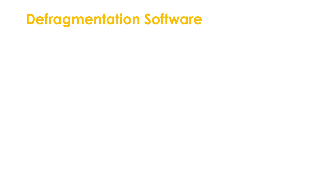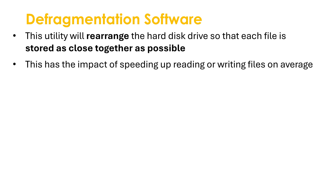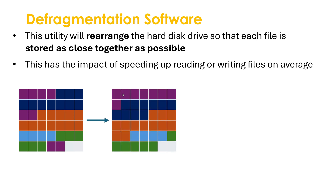We still need to know about defragmentation software, which tries to fix this issue and help maintain our computer to make it run more smoothly. This utility rearranges the hard drive so that each file is stored as close together as possible — it essentially shuffles things around so files are ideally stored in one block. The impact after the software runs is that it speeds up reading and writing on average. So a fragmented hard drive with a file in three different locations gets rearranged so it's stored together, meaning the disk doesn't have to move as much to read or write.